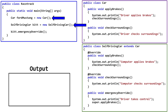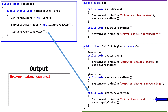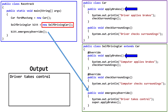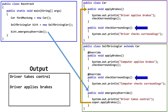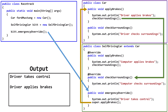Let's look at a third example. Again, we have the variables fordMustang and kit. Here, we call emergencyOverride from kit. The emergencyOverride call is unique to the Self-Driving Car class. First, Java outputs 'driver takes control.' Next, there is a call to super.applyBrakes. Kit is pointing at a Self-Driving Car object, but super means we want to call applyBrakes from the super class Car — Java outputs 'driver applies brakes.' Then a call to checkSurroundings. This frequently confuses programmers who assume they'll stay in the super class Car and use Car's version. However, since kit still points at a Self-Driving Car object, we use the most recent version of checkSurroundings, which is in the Self-Driving Car class. Java outputs 'computer checks surroundings,' and the program completes.